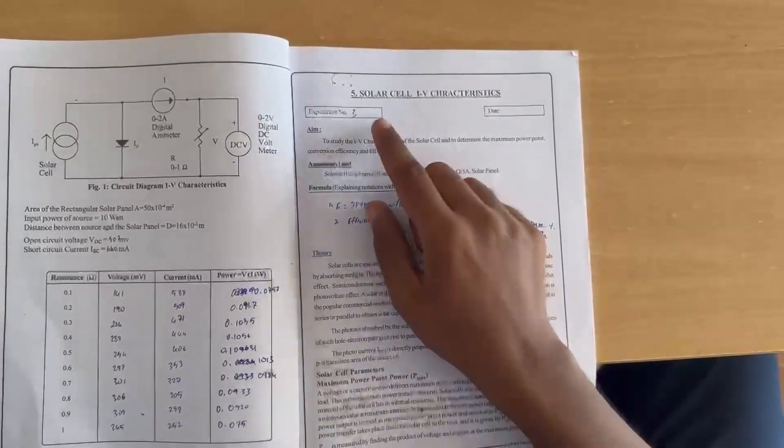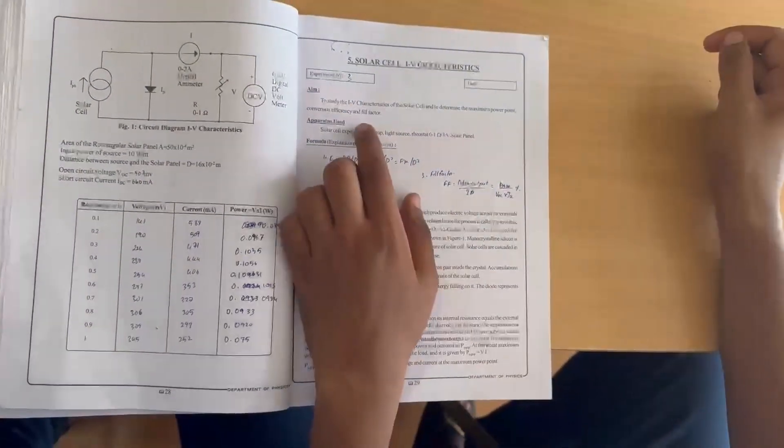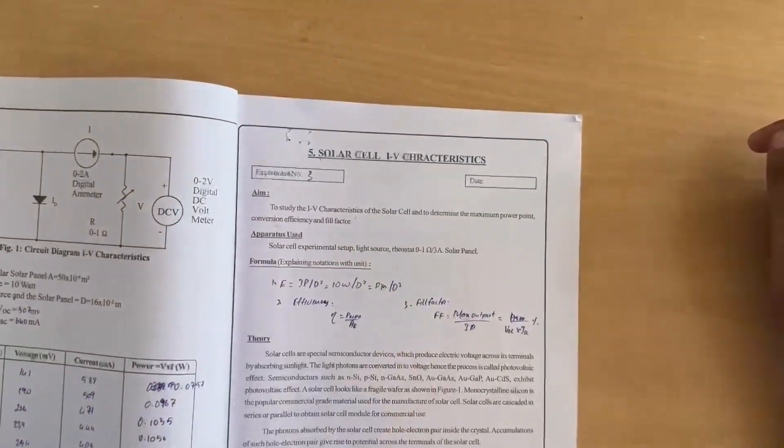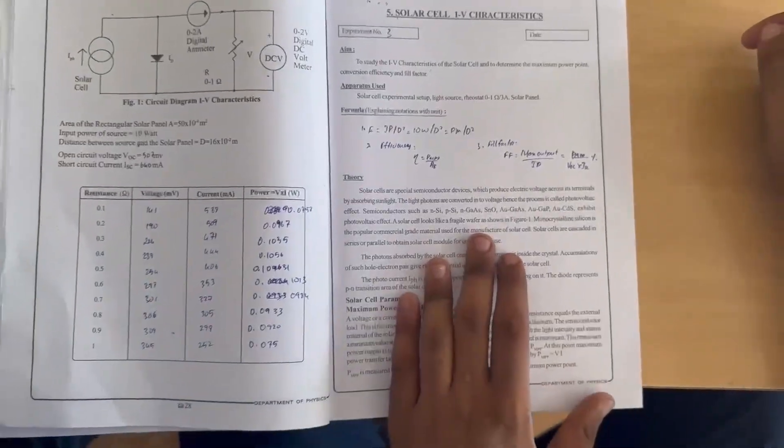The experiment is on solar cell IV characteristics. The aim is to study the IV characteristics of the solar cell and to determine the maximum power point, conversion efficiency, and fill factor.